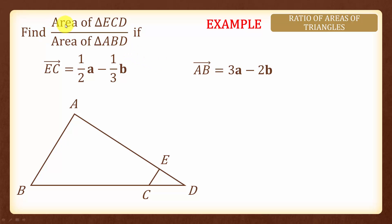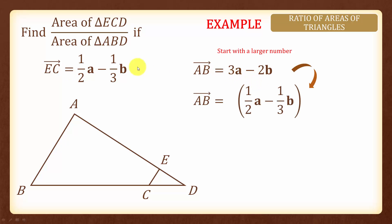We are asked to find the ratio of the area of triangle ECD over area of triangle ABD, given that vector EC and vector AB are as provided. We will try to see whether these two vectors are scalar multiples of each other — can we multiply with a scalar K such that AB equals K times EC?